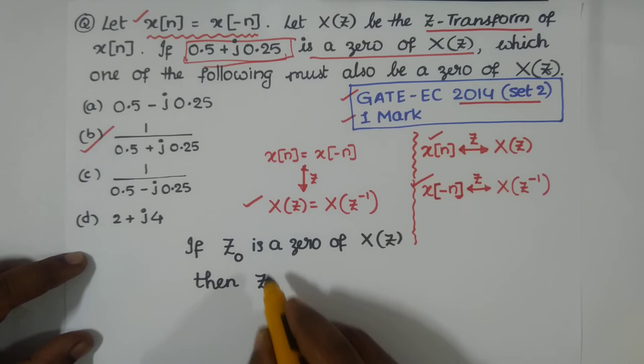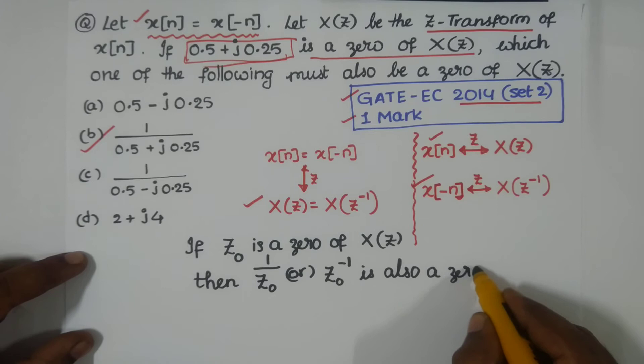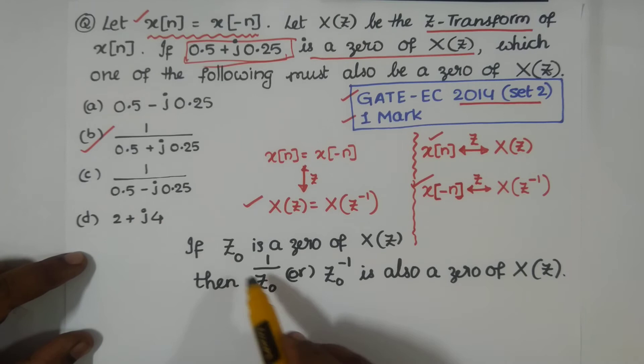If Z_0 is a zero of X(Z), then 1/Z_0 or Z_0 inverse is also a zero of X(Z).